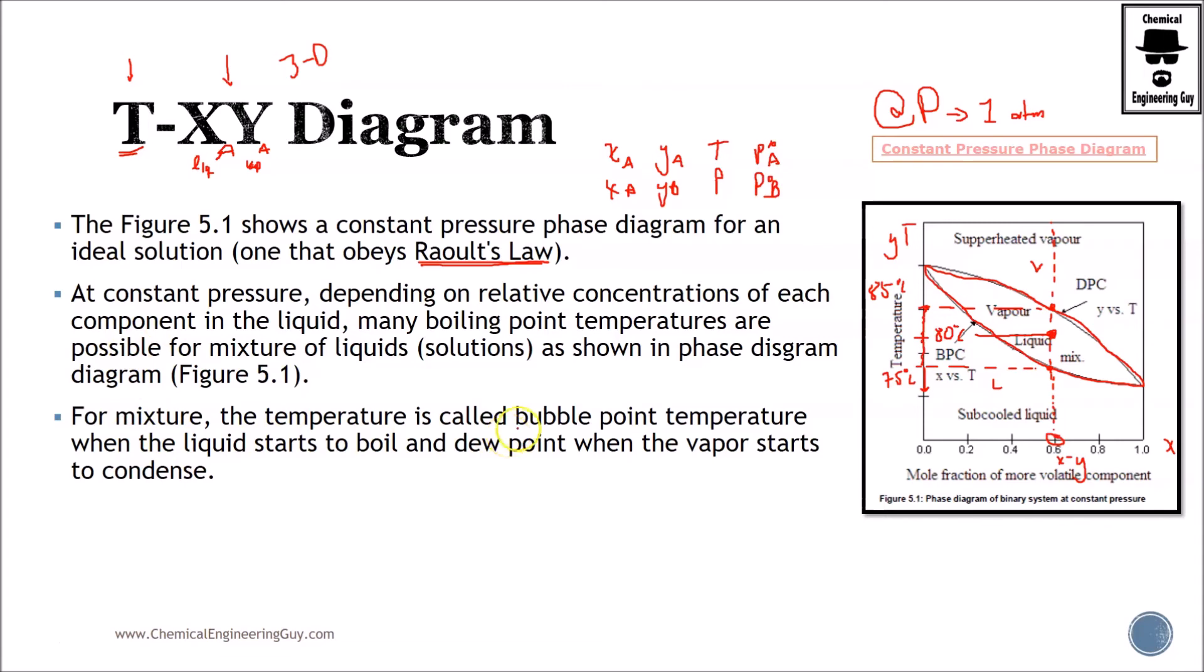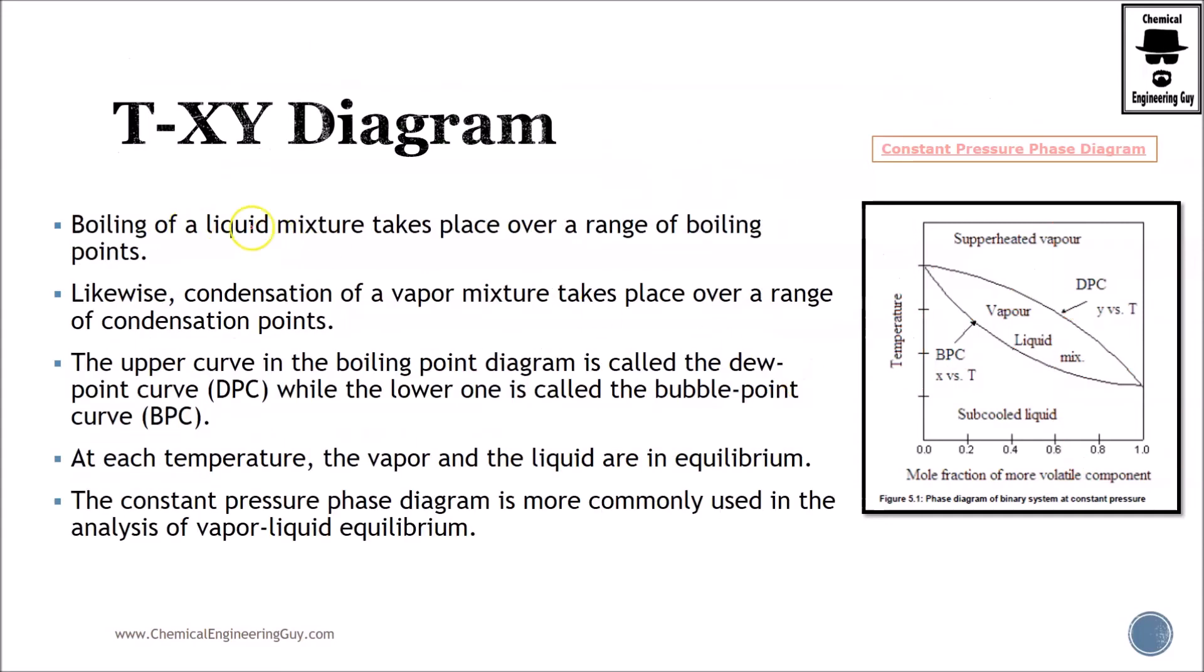And very important guys, I'm going to explain you bubble point temperatures and dew point temperatures as well. But for now, as you can see here, boiling of a liquid will have several points, that's true. So probably you're wondering how can we have a mixture that boils at 85 Celsius, boils at 78 Celsius, 70 Celsius, maybe even 65 Celsius. How is that possible? Well, this is possible because of the mixture.